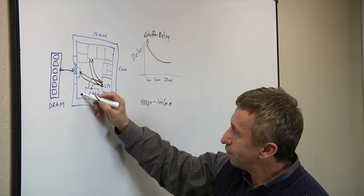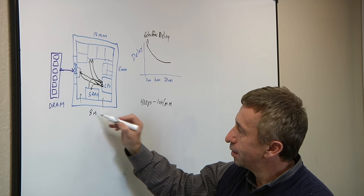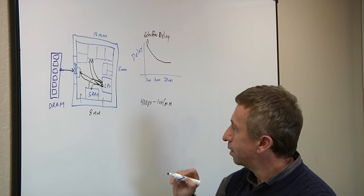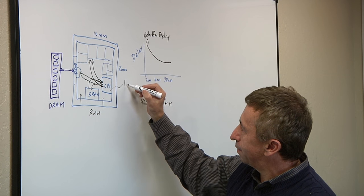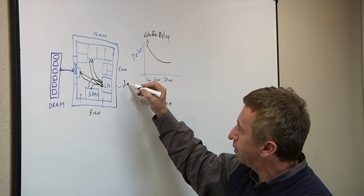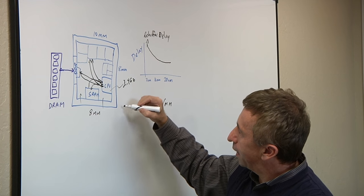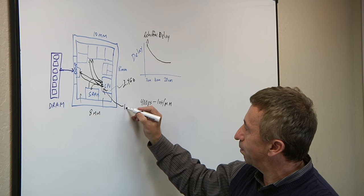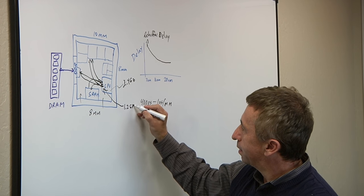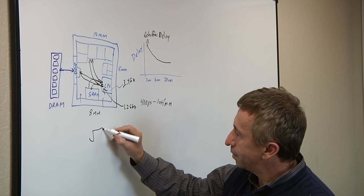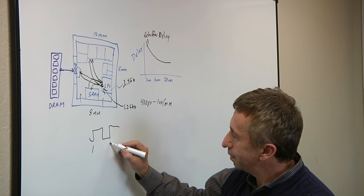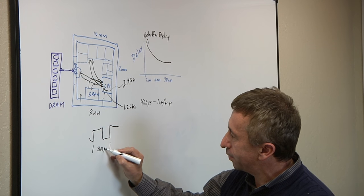If you look at trying to traverse, let's say, eight millimeters across the chip, and let's take an example that the CPU is going to run at 2.4 gigahertz and its bus interface runs at 1.2 gigahertz. It means we've got a clock cycle of about 800 picoseconds.